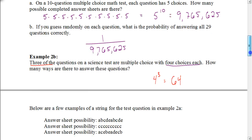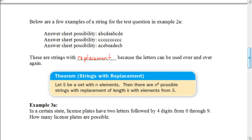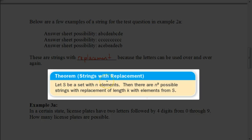This leads us to the theorem for strings with replacement: if we can replace values each time, the number of strings is n to the k power, where n is the number of elements and k is the length of the string. In the previous example, four choices gives base n = 4, and three questions gives k = 3, so we have four cubed.